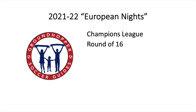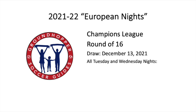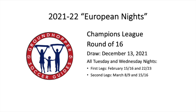That leads us to the round of 16. The draw for that is on December 13th — right after the group stage is finished. We're again playing on Tuesday and Wednesday nights, but after that December draw we have to wait two months. The round of 16 first legs are February 15th, 16th, 22nd, and 23rd. The second legs are March 8th and 9th and 15th and 16th — of course, that's 2022.